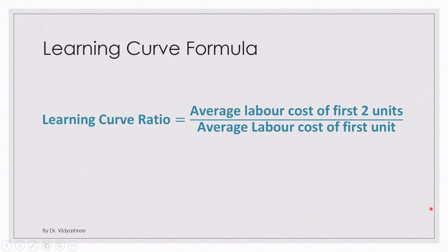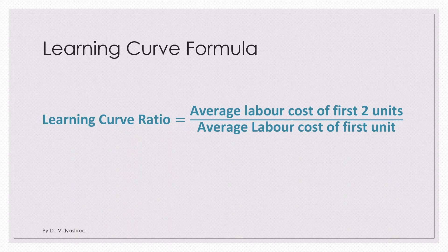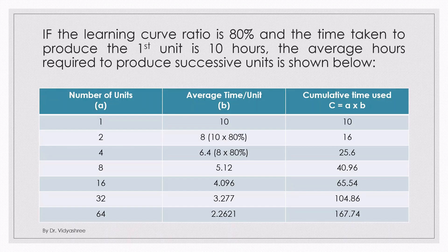Now let's understand the formula to calculate the learning curve. Learning curve ratio equals the average labor cost of the first two units divided by the average labor cost of the first unit. You take the average labor cost of the first two units of production divided by the average labor cost to produce the first unit, and you get the learning curve ratio.